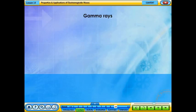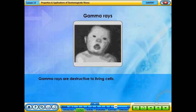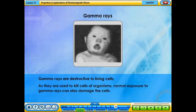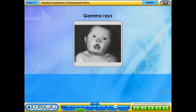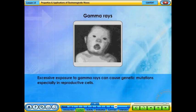Gamma rays are destructive to living cells. Normal exposure to gamma rays can also damage cells. Excessive exposure to gamma rays can cause genetic mutations, especially in reproductive cells.